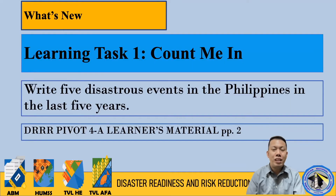Let us now proceed to your first learning task. This is under 'What's New' and is found on your learner's material, page 2. The title of the learning task is 'Count Me In,' where you have to write five disastrous events in the Philippines in the last five years. You can search on Google or use your stock knowledge, since these events are recent. Write your answers on paper to submit during the retrieval of the activity sheets, or upload via the Google link provided.